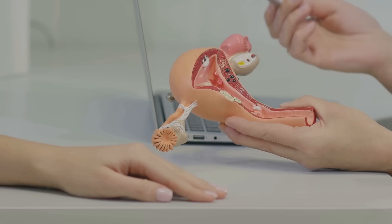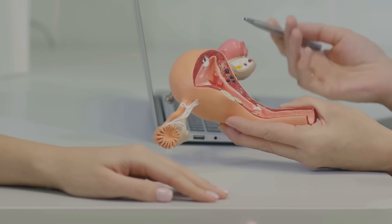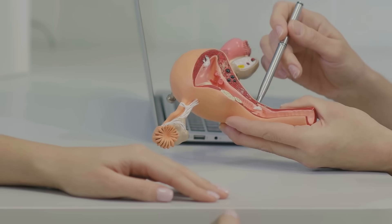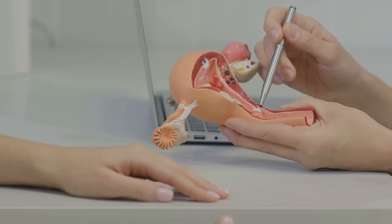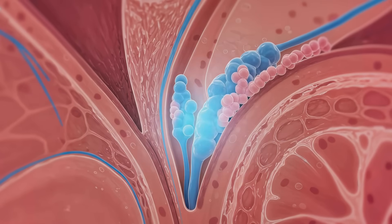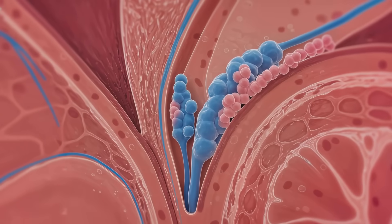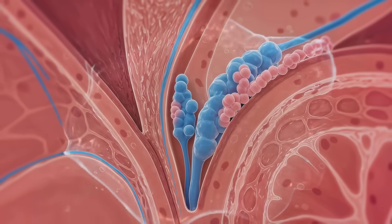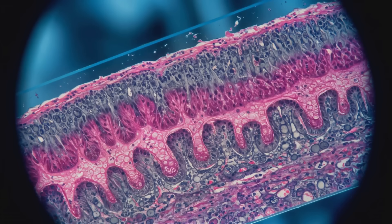Clinicians assess overall genital health, checking for abnormalities or signs of infection during comprehensive pelvic exams. Clinicians also assess surrounding structures, including the Skene's glands near the urethra, which contribute to lubrication during arousal.